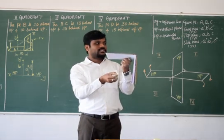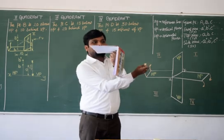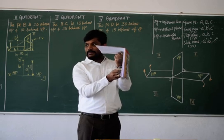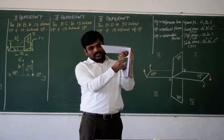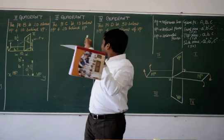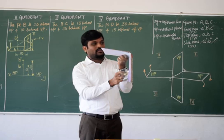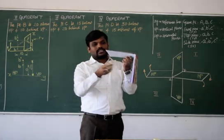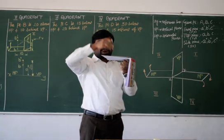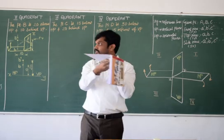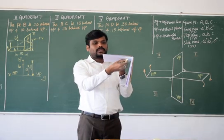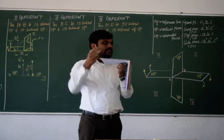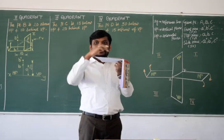This is capital C. As we said, the planes will be transparent. Viewing from this side, the front view will be on the vertical plane at a distance below — how much? 15. That is C dash. Now, the point is here with capital C. Viewing it from the top, it is at a distance of 20 behind. The point appears here — that is the top view — represented with small letter C. So, C dash and C: C dash is on the vertical plane, C is on the horizontal plane.